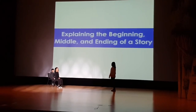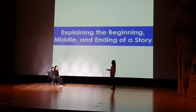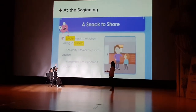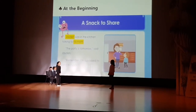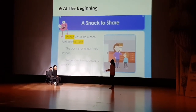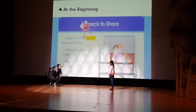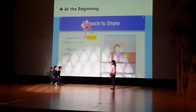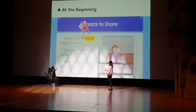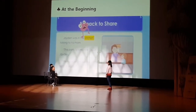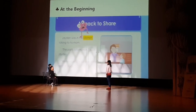Now I'm going to ask some questions about this story. At the beginning, what are the characters in this story? Jayden and his mom are the characters in this story. Good job! At the beginning, what is the setting? The kitchen is the setting. At the middle, what problem do Jayden and his mom have? Jayden needs to take a snack to a class party, but his mom didn't go shopping. Good job!